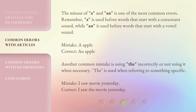The misuse of a and an is one of the most common errors. Remember, a is used before words that start with a consonant sound, while an is used before words that start with a vowel sound. Mistake: a apple. Correct: an apple.